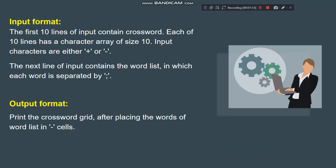In the input format, we basically have 10 lines, and each of these lines contains plus or minus signs. The next lines contain the word list. It's not necessary that the number of words equals the order of the matrix — the words can be of any number, more or less. The output format requires us to print the crossword grid after placing the words of the word list in the minus cells.